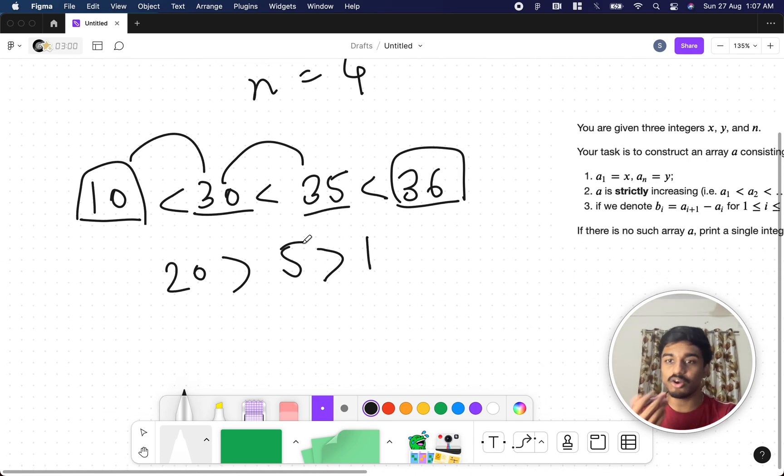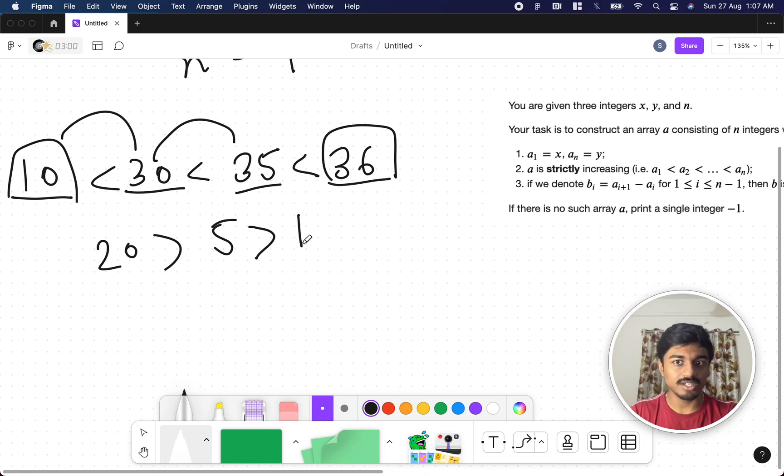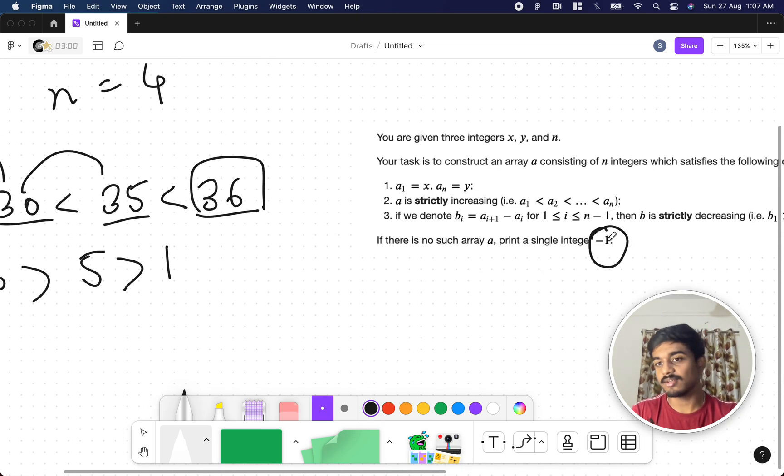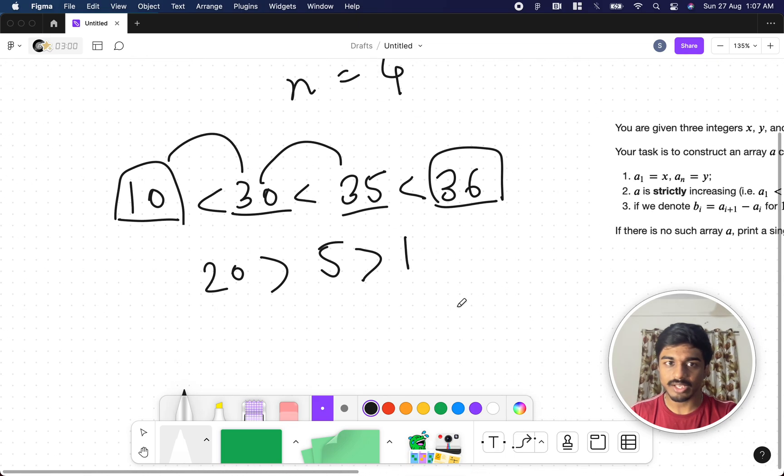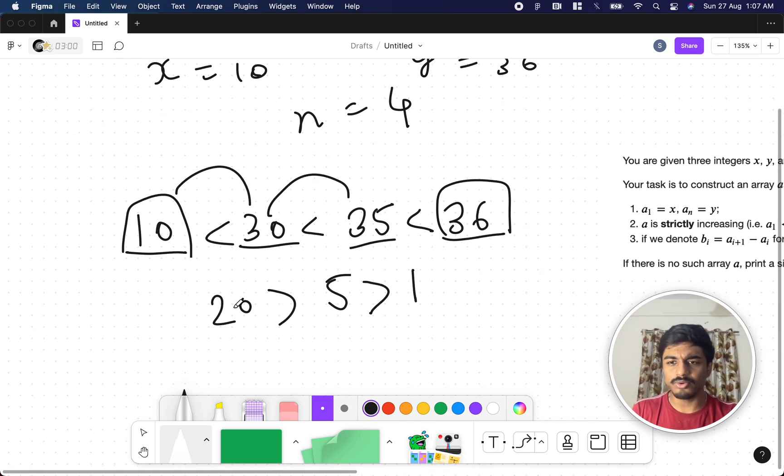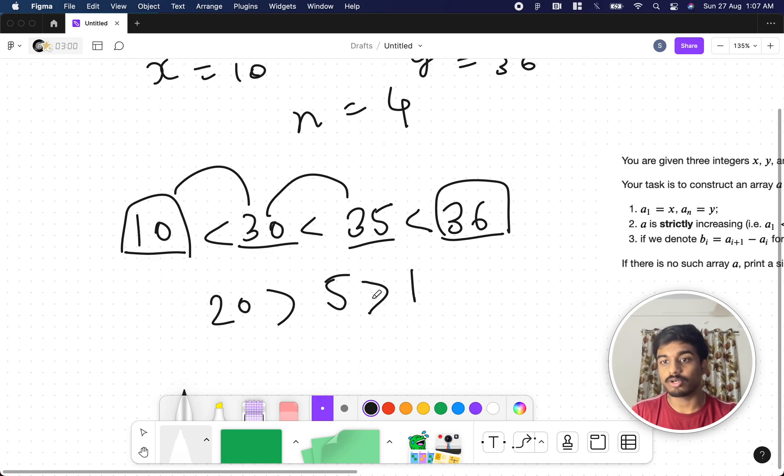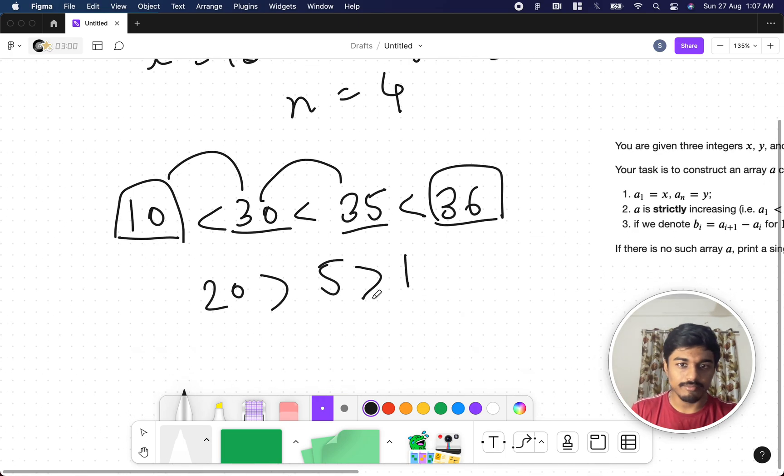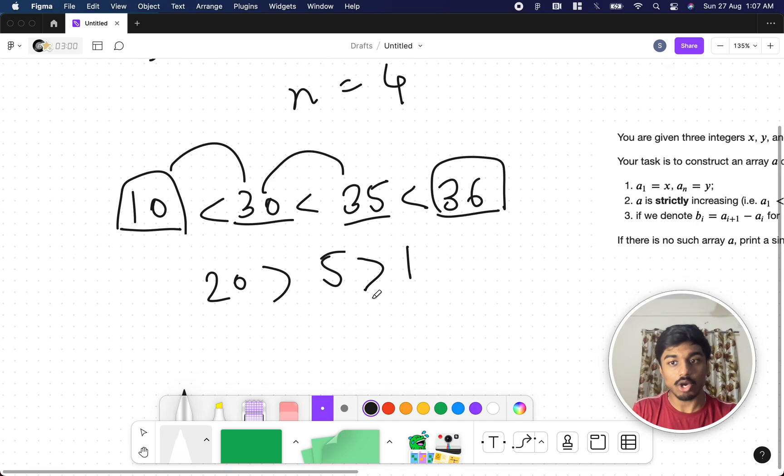So how do we do it? And if the result is not possible they just told that you just have to print a single integer minus 1. So initially we have x and y right and we want to know whether this condition is possible or not. So whenever we write it we create the best possible outcome.